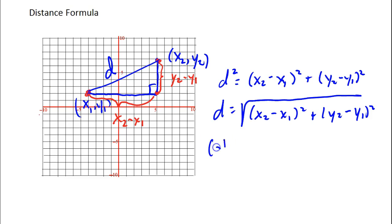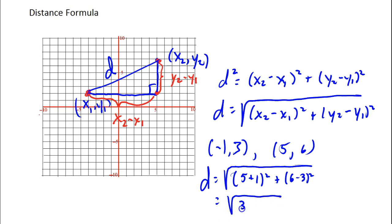So let's just say we have a couple points, negative 1, 3, and 5, 6. And what's the distance between them? The distance is going to be the square root of 5 minus negative 1, that would be 5 plus 1 squared plus 6 minus 3 squared, which is the square root of 36 plus 9, which is the square root of 45. And I take a 9 out, and that distance is 3 root 5.